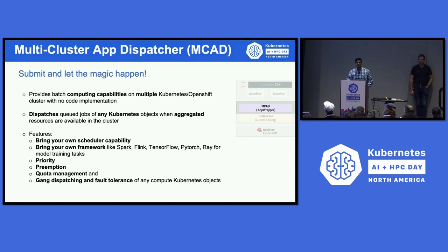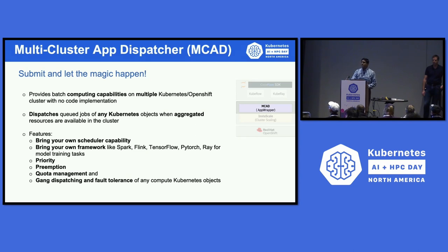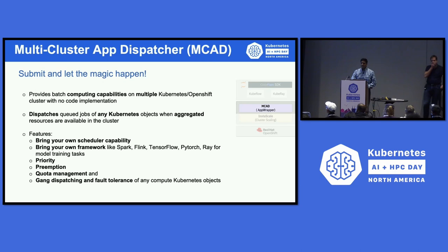MCAD, or Multi-Cluster App Dispatcher, provides batch computing capabilities on multiple Kubernetes or OpenShift clusters. It dispatches AppWrappers when aggregated resources are available, thereby guaranteeing workload execution and just-in-time pod creation — all with zero code changes on the target operator. It provides features such as bring-your-own scheduler, supporting any upstream Kubernetes scheduler, and bring-your-own framework — so you can bring Spark, Flink, PyTorch, Ray, or TensorFlow workloads. It also provides standard batch computing features such as priority, preemption, and quota management.